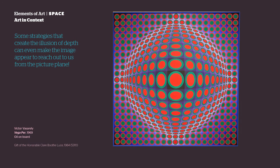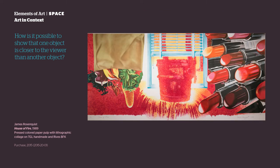Some strategies that create the illusion of depth can even make the image appear to reach out to us from the picture plane. How is it possible to show that one object is closer to the viewer than another object? Let's look at some techniques.